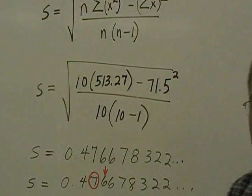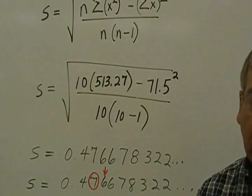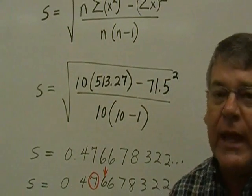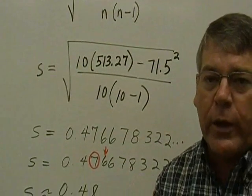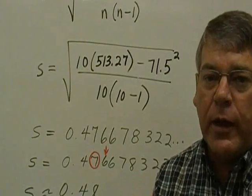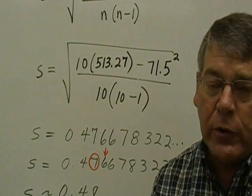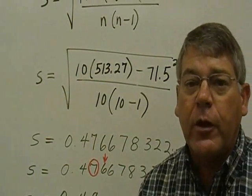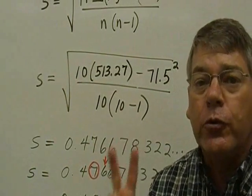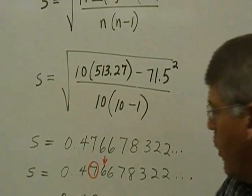Now, remember that our original data set contained numbers that were to tenths place or one decimal place. Our textbook tells us that the correct way to round is one decimal place more than was included in the original data. Since the original data had one decimal place, we want to round our answer to two decimals or hundredths place.